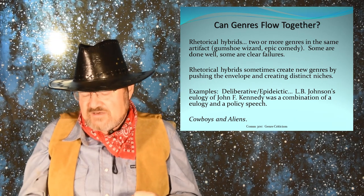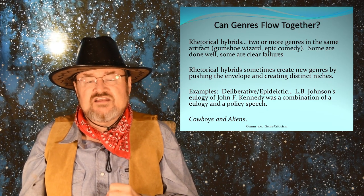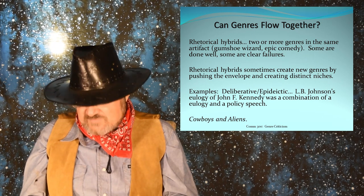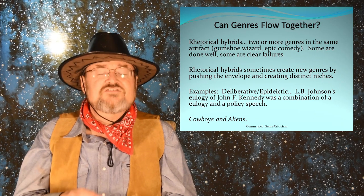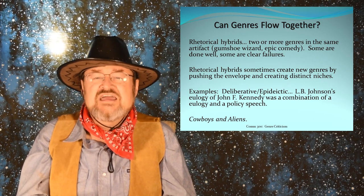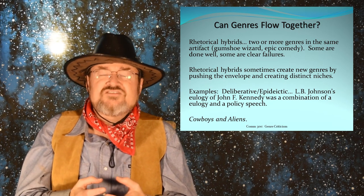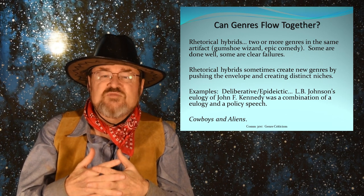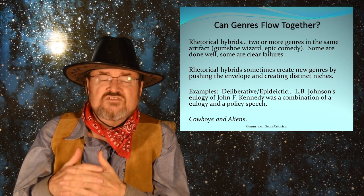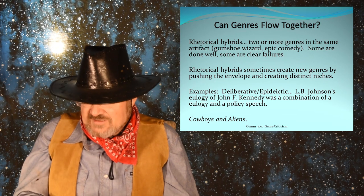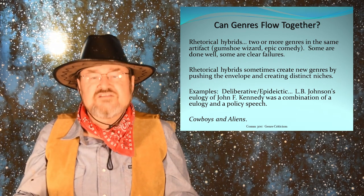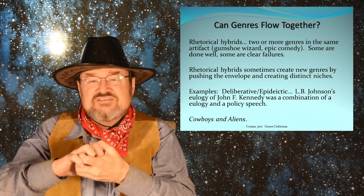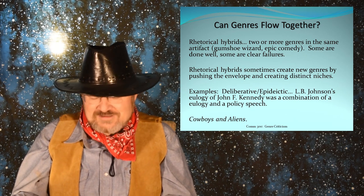An example of a rhetorical hybrid: when Lyndon Baines Johnson gave the eulogy for John F. Kennedy, who was assassinated, he used epideictic rhetoric — he praised Kennedy. But he was also concerned about the direction of the country, so he slipped in some policy rhetoric as well. It was a blend of epideictic rhetoric, praising the assassinated president, and deliberative rhetoric, setting a course for the nation moving forward. Another example in modern parlance is the movie Cowboys and Aliens — they took two different genres and mixed them together. Some people felt it didn't work very well; others really enjoyed it.